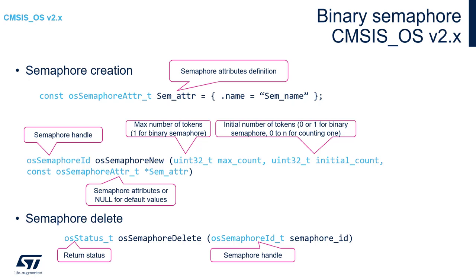Then we create the semaphore using the function osSemaphoreNew. The first argument defines the maximum number of tokens held by the semaphore — for a binary semaphore we specify one. For a counting semaphore, which we will describe later, we specify the maximum number of available tokens. The second argument is the initial count, usually zero, so the semaphore is not released at the beginning. The third argument is the pointer to the attributes structure, for example with its name.